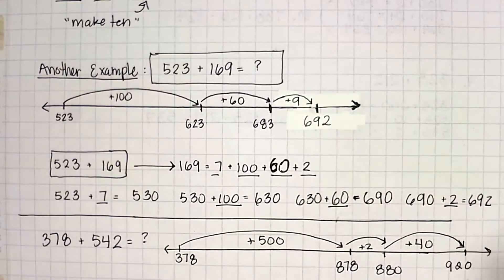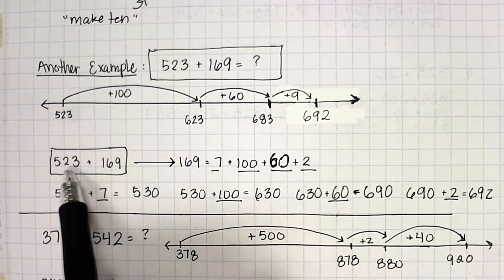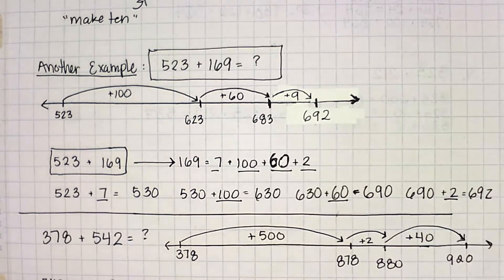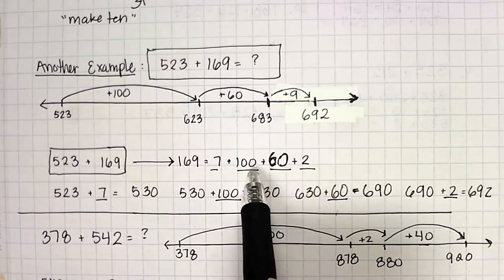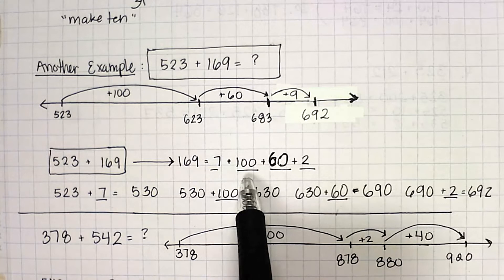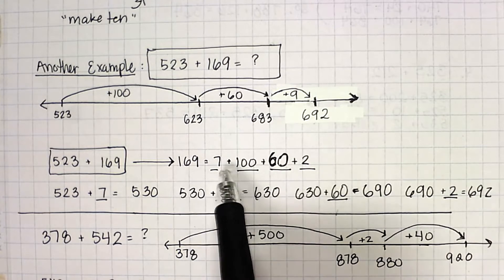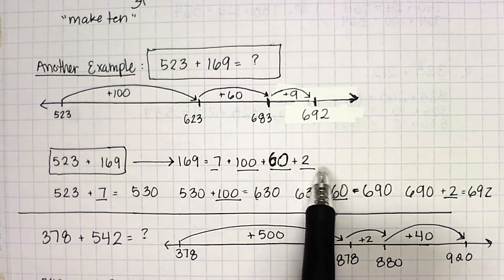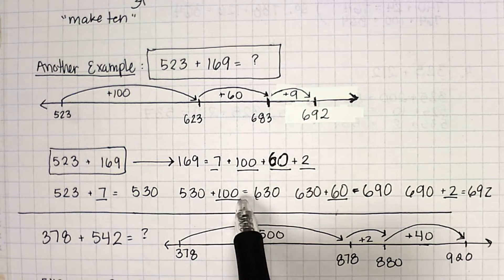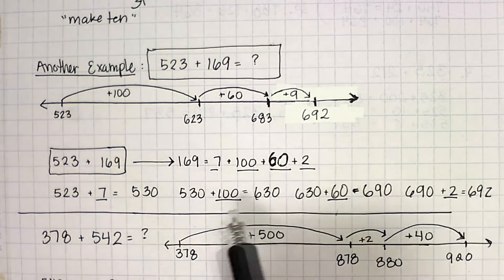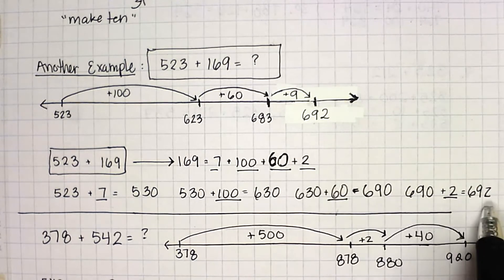Now, if I'm going to use the make 10 strategy, I'm going to take my same numbers. So the 169, I'm going to break it apart into 7 because I'm looking at this number 523. I need 7 more to make it into the next group of 10, which would be 530. So I know my first piece is going to be 7. My next piece is going to be 100 because it's easy to add with hundreds. And then I put 60 and then 2. So I broke apart 169 into 7, 100, 60, and 2. So 523 plus 7 gave me 530. 530 plus 100 gave me 630. 630 plus 60 gave me 690. 690 plus 2 gave me 692.